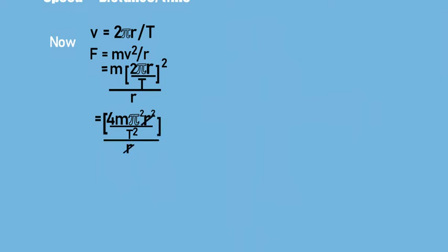By taking the square and solving the bracket, we will get m × 4π²r²/T² upon r. We can divide this r² by this r, and ultimately we will get 4mπ²r/T².